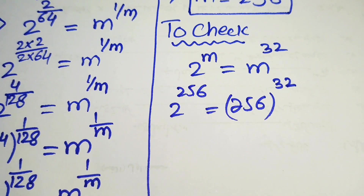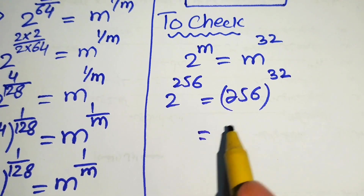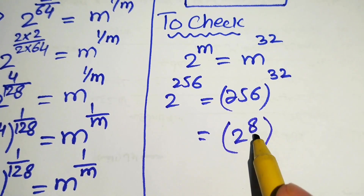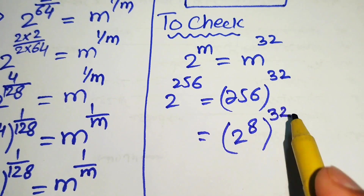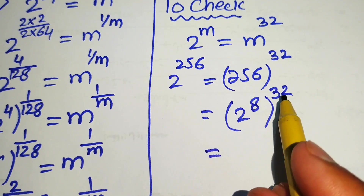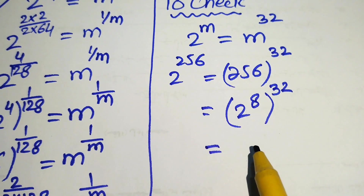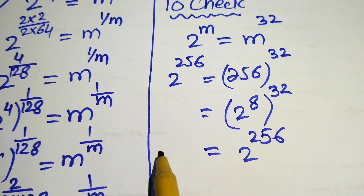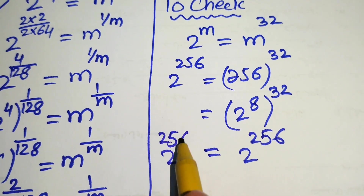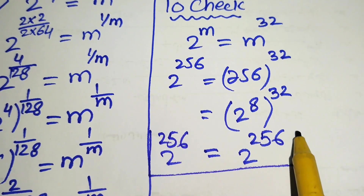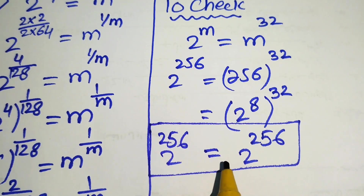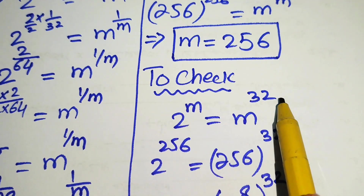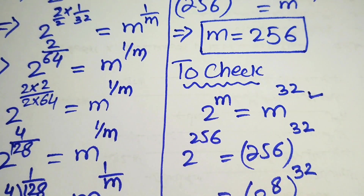We write the base 256 as 2 to the power of 8, since 2^8 = 256. So the right hand side becomes 2 to the power of 8, with whole power 32. Multiplying 32 by 8 gives 256, so the right hand side equals 2 to the power of 256. Left hand side equals right hand side, confirming that m = 256 satisfies the equation.